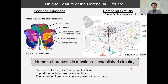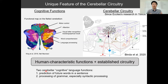Among the cerebellar human characteristic cognitive functions, I focused on two cerebellar cognitive language functions. Here, cognitive language functions refer to non-sensory, non-motor language functions such as sentence comprehension and word processing. Among such cognitive language functions, there are two functions in the cerebellum: the first is prediction of future words in a sentence, and the second is processing of grammar, especially syntactic processing.